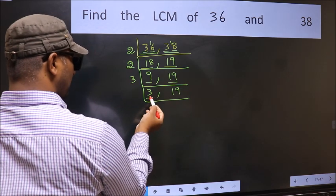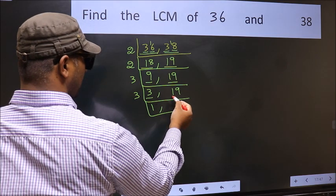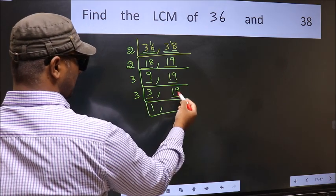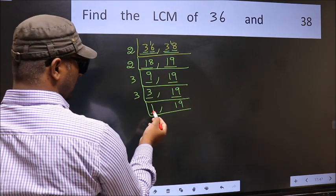Now here we have 3. 3 is a prime number, so 3, 1 is 3. The other number 19, not divisible by 3, so we write it down as it is.